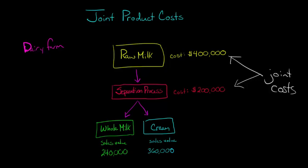Now here's the question: how do we allocate these joint costs among the products? These products — in this case — are going to be called joint products.